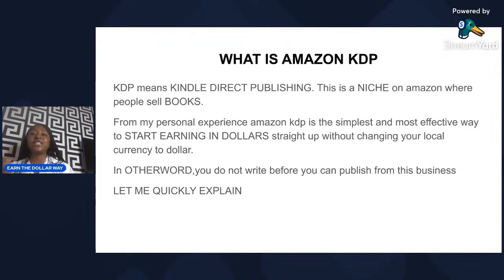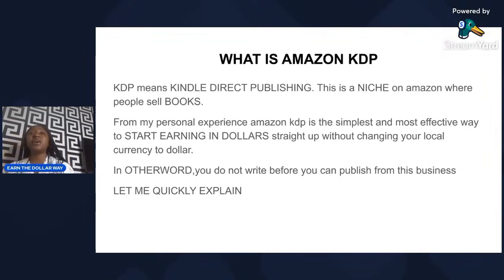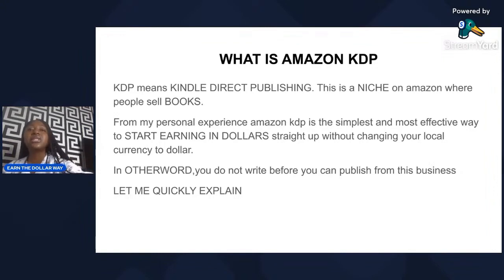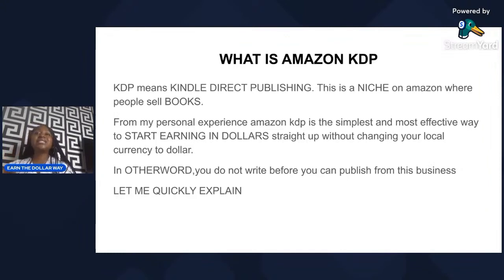Let me use what we're all familiar with — Facebook. Let's assume Facebook is Amazon and WhatsApp is Amazon KDP. On Facebook you can sell clothes, shoes, physical products, cars, hair — anything. But on WhatsApp you only sell books. So KDP is the place on Amazon where people sell only books, just like a bookshop sells nothing else other than books. From my personal experience, Amazon KDP is the simplest and most effective way to start earning in dollars straight to your bank account.